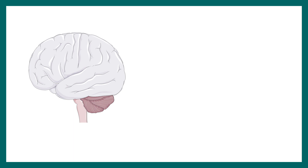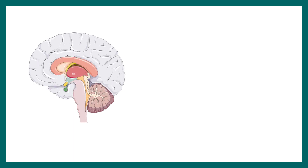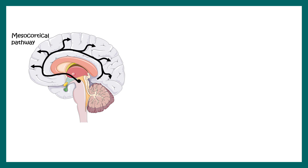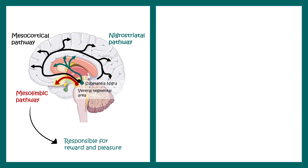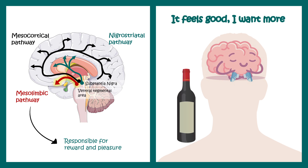Once in the brain, alcohol affects several pathways. One of the major neurological pathways that alcohol affects is the dopaminergic system. There are several dopaminergic pathways — the mesocortical pathway, the nigrostriatal pathway, and the mesolimbic pathway. The mesolimbic pathway is important for our reward system and is responsible for giving us the feeling of pleasure and euphoria. Alcohol affects this particular pathway, which explains why we feel good after drinking and why our brain wants more alcohol.